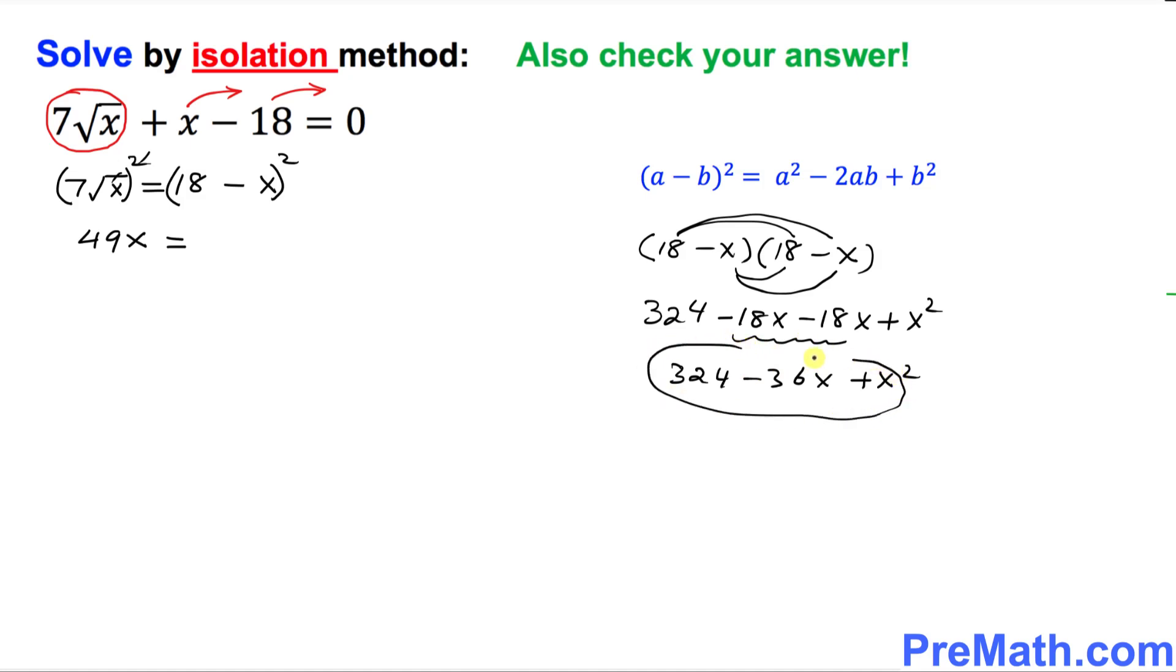So I can write this whole thing back over here. I can write down this one over here, 324 minus 36x plus x square. Now I want you to move this 49x on the right-hand side. So we're going to end up with zero on the left-hand side. Just put everything over here. 324 is already there, minus 36x plus x square.